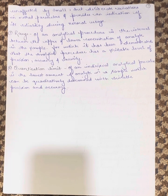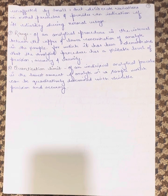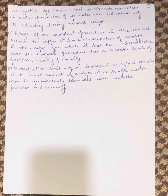Range of an analytical procedure is the interval between the upper and lower concentration of analyte in the sample for which it has been demonstrated that the analytical procedure has a suitable level of precision, accuracy, and linearity. Next, the quantitation limit of an individual analytical procedure is the lowest amount of analyte in the sample which can be quantitatively determined with suitable precision and accuracy.